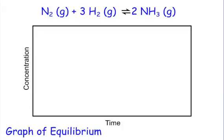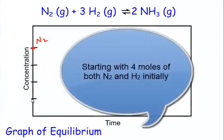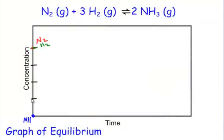Let's start off with graphs of concentration. You've seen a lot of these things in Final Topics before, but we're going to do graphs of concentration first. Let's say I start with about 4 moles of N2 gas, 3 moles of H2 gas, and 0 products — 0 NH3.